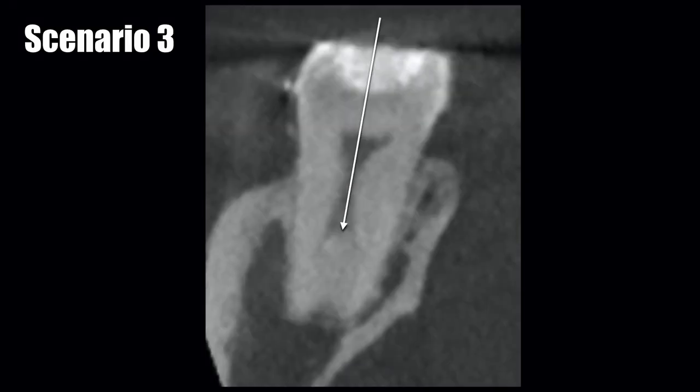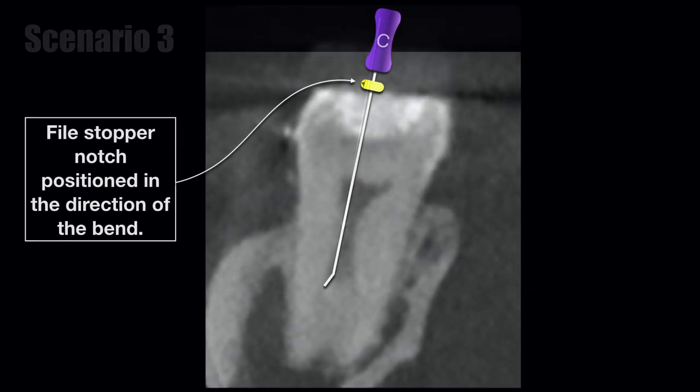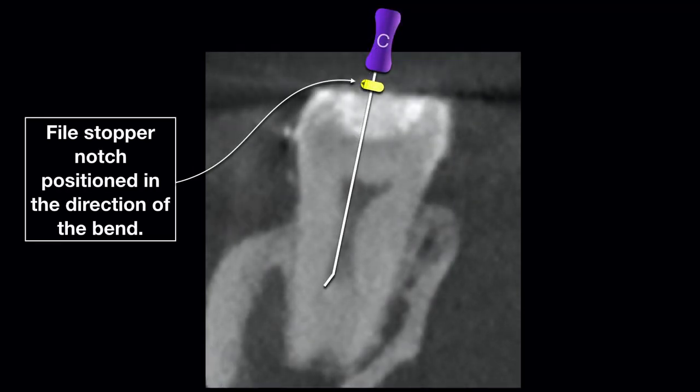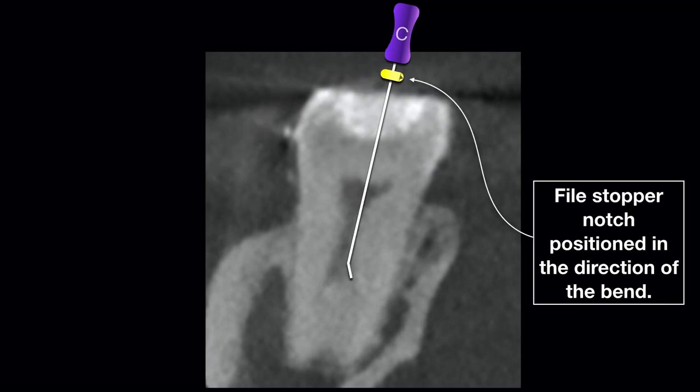Place the file in the canal with the bend facing either the buccal or lingual direction and use tactile senses to feel and find that canal. The theory behind this technique involves file deflection — instead of the file running straight into the furcation stop, the file bend deflects it into one direction, either buccal or lingual. Setting the stopper is critical because we can't see the bend once it's in the canal, but the stopper marker tells us the orientation of the file within that canal. Once the first canal is located, repeat the process and look for the second one.